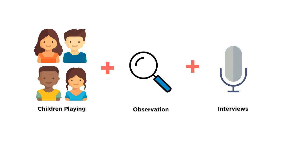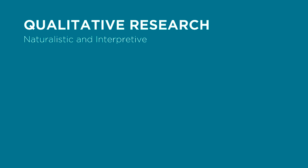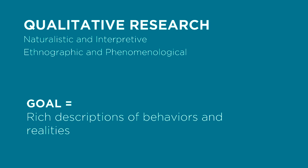But if you go into a preschool classroom, observe children playing, and conduct open-ended interviews with children and teachers about classroom behaviors, you're taking a qualitative approach. Qualitative approaches are naturalistic and interpretive. You might hear terms like ethnographic or phenomenological to describe qualitative research. The goal here is to richly describe people's behaviors and realities rather than to quantify or measure them.